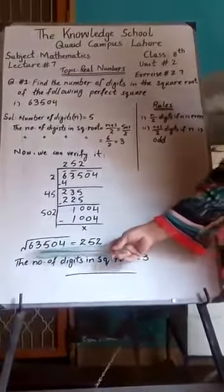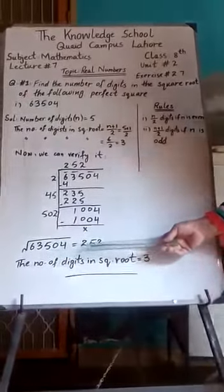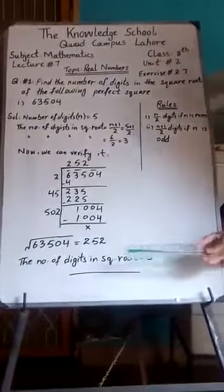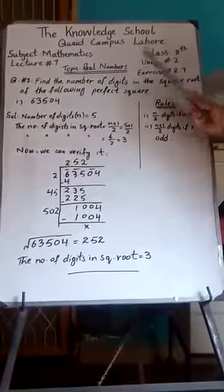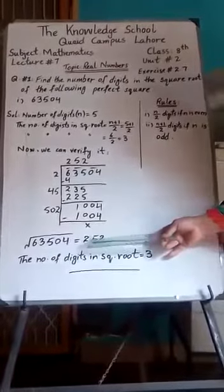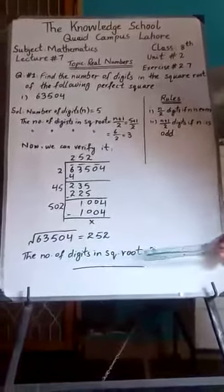Square root of 63504 is equal to 252. Student question was that number of digits hama find karenge, hama count karenge, answer ke number of digits: 1, 2, 3. So number of digits in square root is 3.